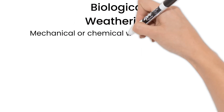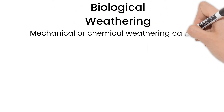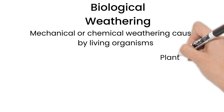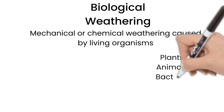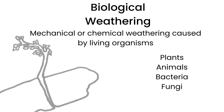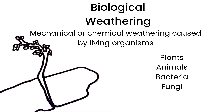Biological weathering is mechanical or chemical weathering caused by living organisms. Remember, bio means living. Organisms such as plants, animals, bacteria, and fungi can cause biological weathering. Tree roots can grow in cracks of rocks and split them. Chemicals from plants or fungus can also weaken and break apart rocks.